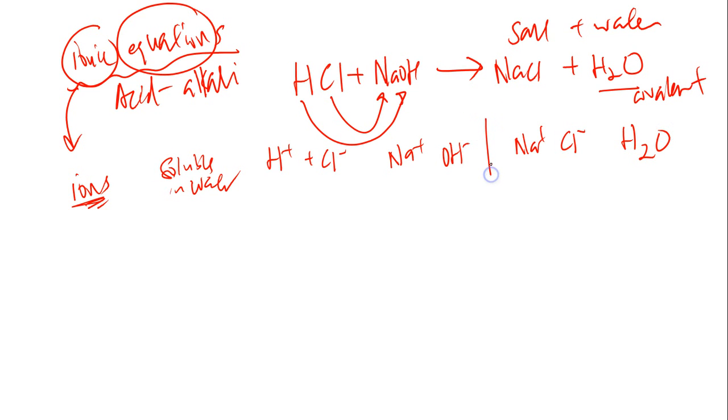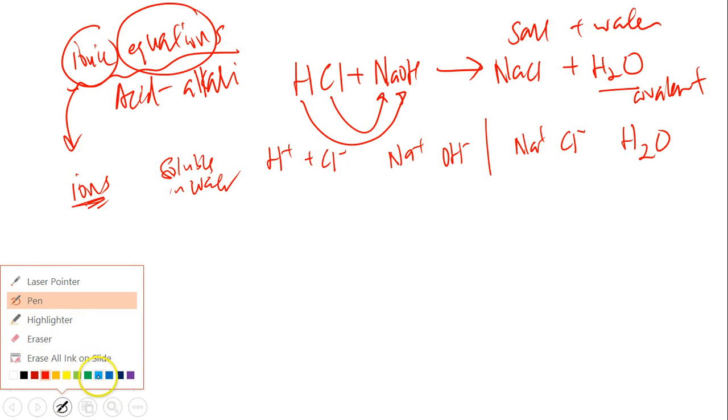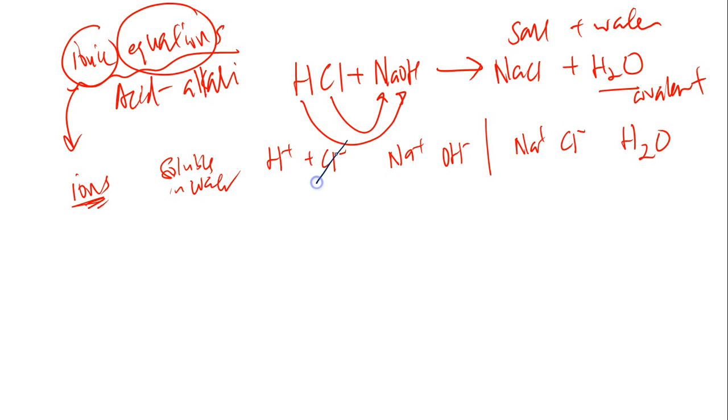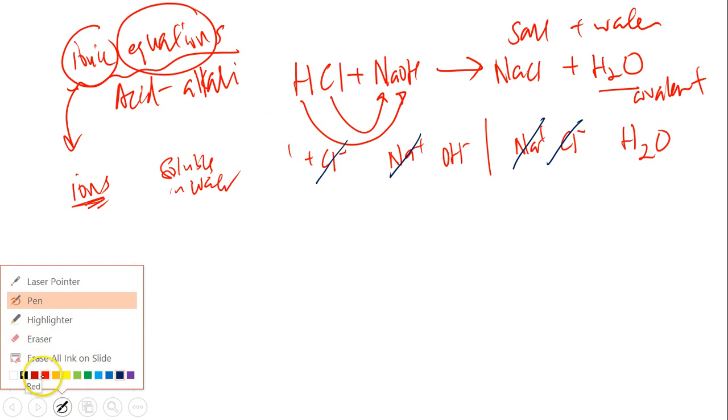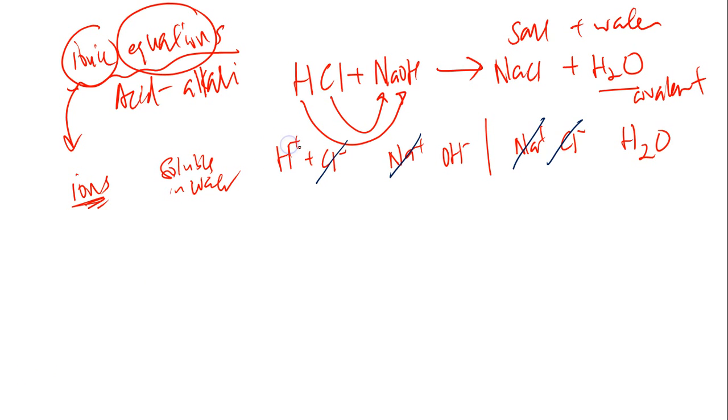So these are the two sides of the equation. We cancel the same ions on both sides. So now what do we have? We have Cl, which is the same, and we have Na, which is the same. At the end of the day, what do we have left? We have left with H plus, OH minus, and H2O.